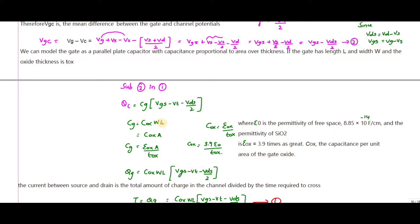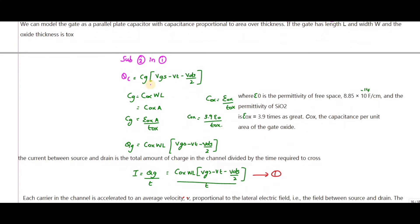The gate capacitance C_G = C_ox × W × L, where W × L is the gate area. C_ox = ε_ox / t_ox = 3.9 × ε_0 / t_ox, where ε_0 = 8.85 × 10⁻¹⁴ F/cm. Substituting C_G = C_ox × W × L into Q_channel gives the third and fourth equations for charge in the channel.